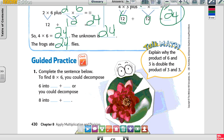Here it says complete the sentence below to find 8 times 6. You could decompose. So I need to decompose 8. What two numbers that are the same give me 8 when I add them together? 4. So it's going to be 6 into 4 plus 4.